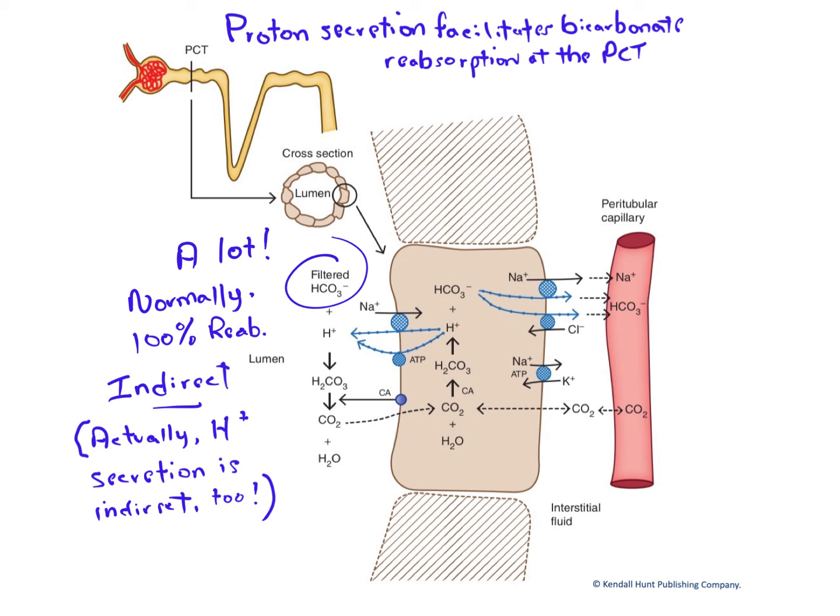Wouldn't it be great if we had a subject that was severely acidotic, if we could not only secrete protons and reabsorb filtered bicarbonate, if we could add further to the bicarbonate concentration of the blood? Yes, it would be. The problem is, even in normal people, 100% of filtered bicarbonate is reabsorbed. How can you do better than that?